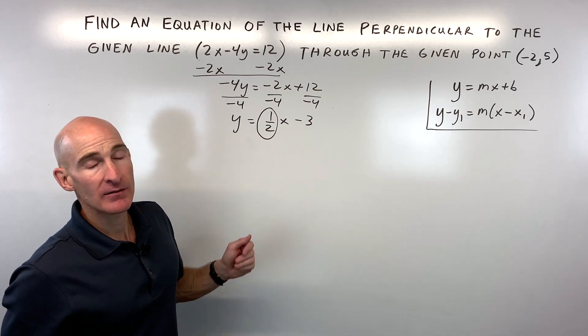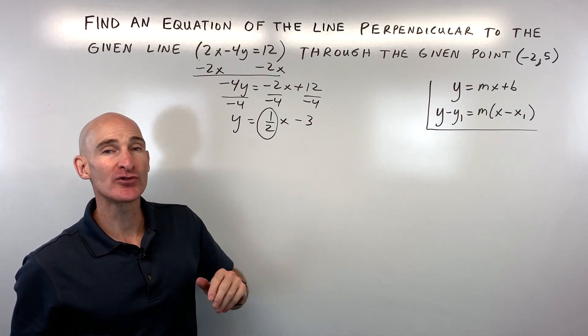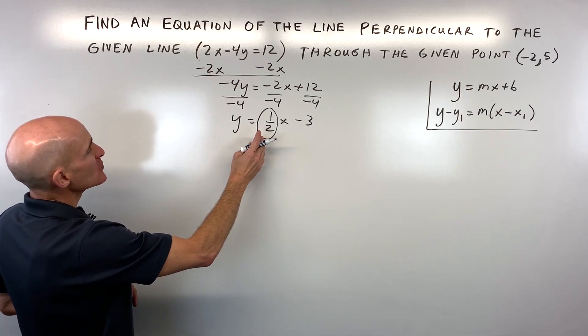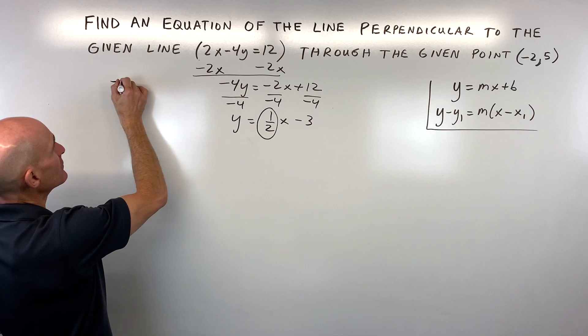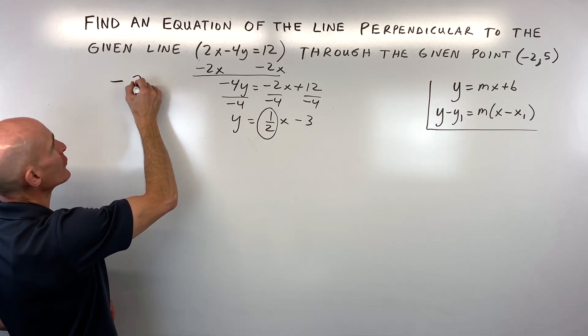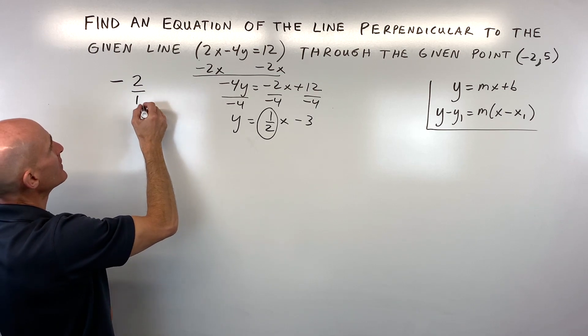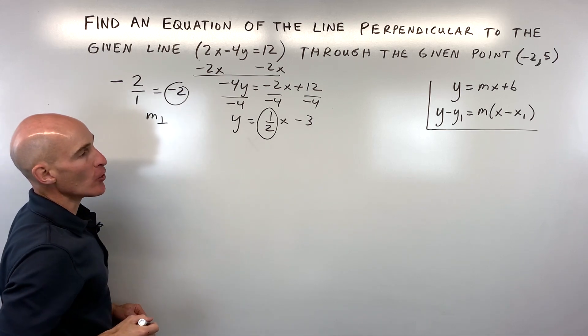Now when you find perpendicular lines, they have the opposite reciprocal slope. What does that mean, opposite reciprocal? It means we have to change the sign to the opposite. So if it was positive, we make it negative. If it's negative, we make it positive. And then reciprocal - we flip that fraction over. That's going to be 2 over 1, which is just equal to negative 2. So this is going to be our perpendicular slope.